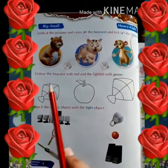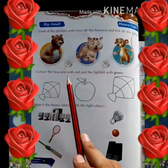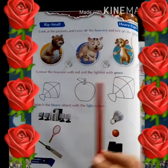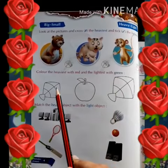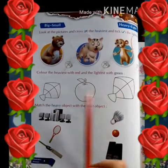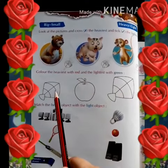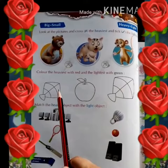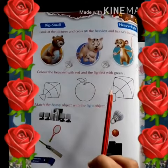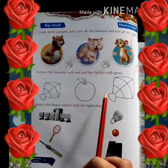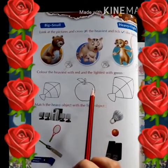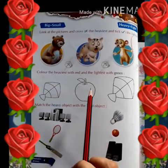The second part is: color the heaviest with red and the lightest with green. We have to color the lightest in the picture with green, and the heaviest with red.